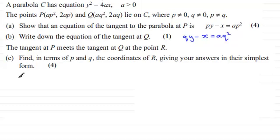To do this, it's just a question of solving these two equations simultaneously. Let's copy those two equations down. For the tangent at P, it was py minus x equals ap squared.